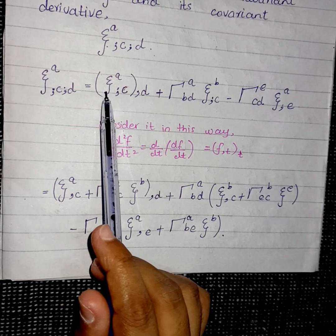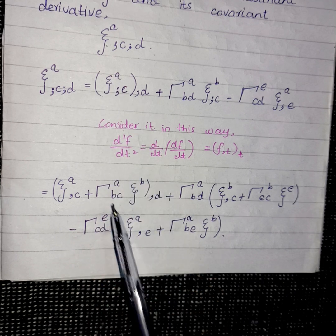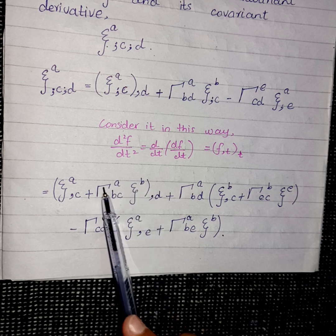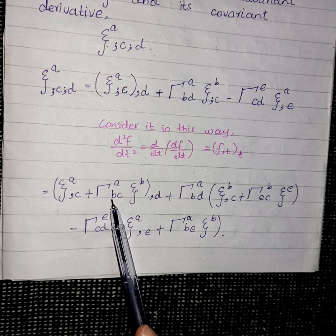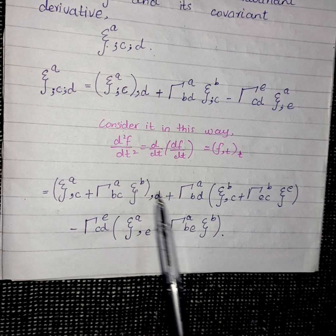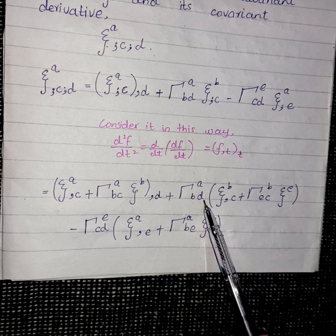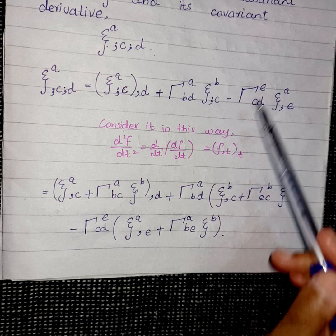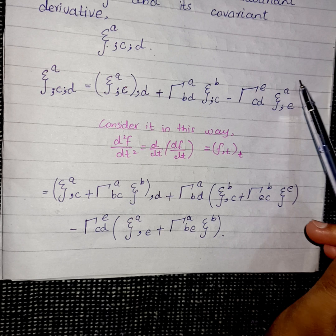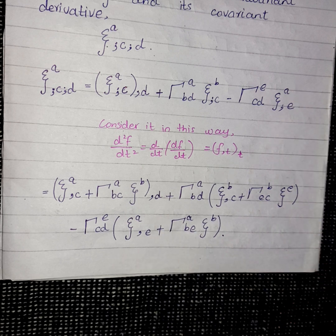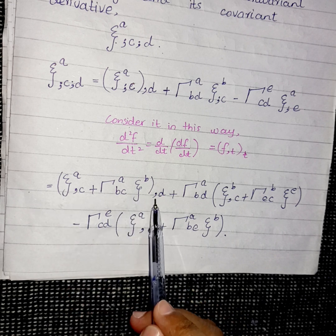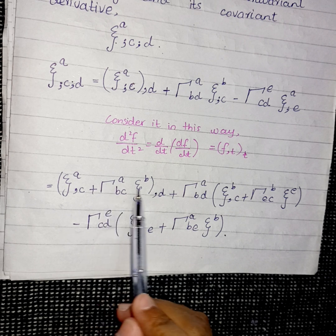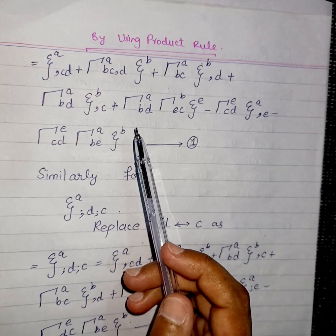If you take the covariant derivative of ξ^A with respect to C, you get its partial derivative with respect to C — where B replaces A as a dummy index — plus Γ^A_BD as it is, times the covariant derivative of ξ^B with respect to C, and then minus Γ^E_CD as it is, times the covariant derivative with respect to E. We want to take the partial derivative with respect to D of the two quantities inside the brackets, so we must apply the product rule.